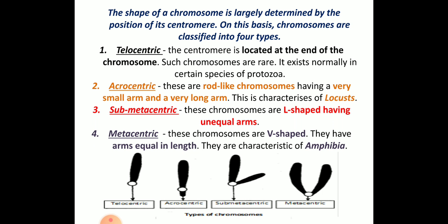Submetacentric chromosomes are L-shaped and they have unequal arms. The P arm and Q arm can be differentiated, but compared to acrocentric, the P arm is much larger. Metacentric chromosomes are usually V-shaped with equal-sized arms, and these chromosomes are mainly characteristic of amphibia.